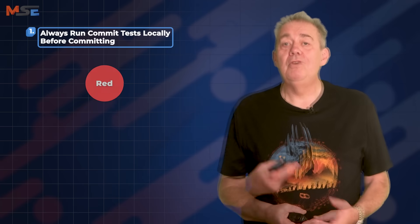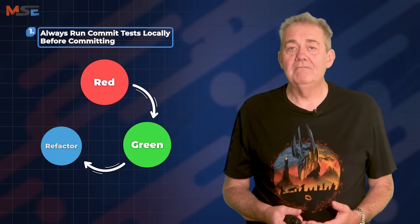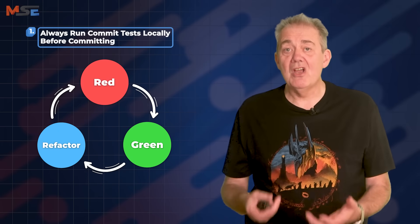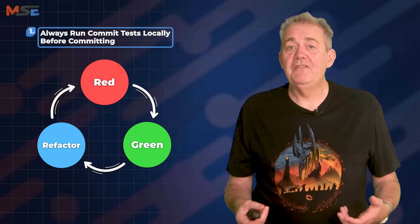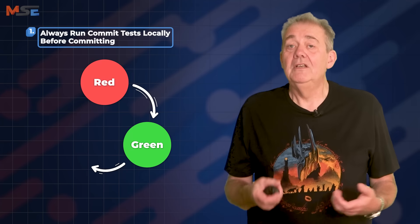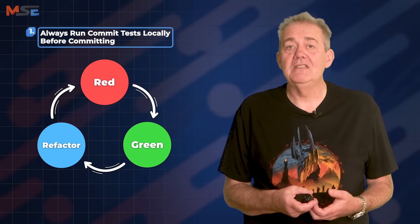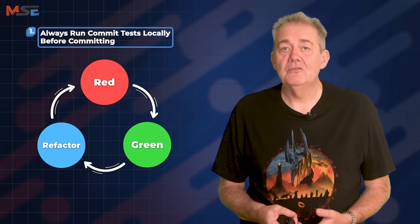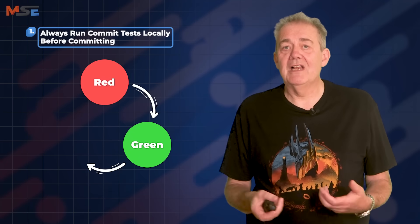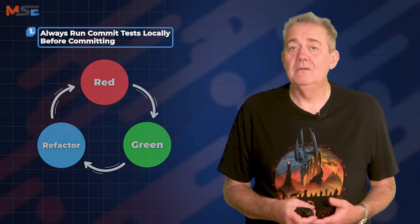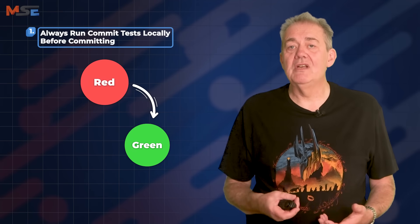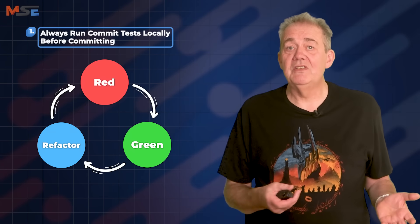Rule number one: always run commit tests locally before committing. Continuous integration starts even before you commit your code. Write your tests and run them locally first. This aligns perfectly with test-driven development — use the red-green-refactor cycle and add commit onto the end to trigger continuous integration. Write a failing test, make it pass, refactor for clarity and readability, and only when your tests pass should you commit your code. By doing this, you're ensuring that your changes don't unnecessarily disrupt the team.